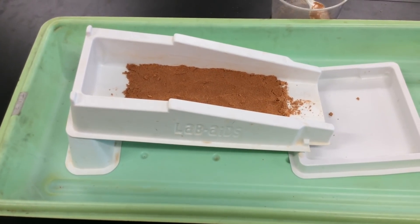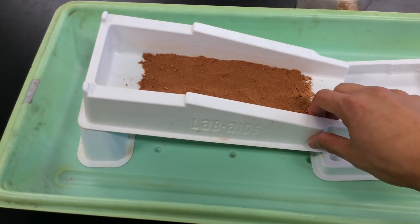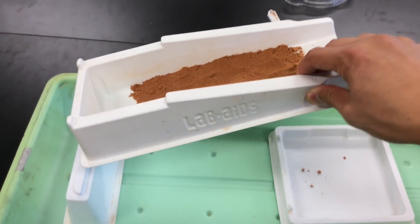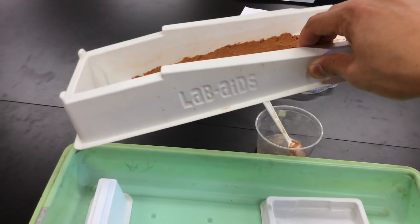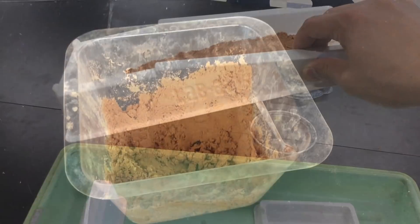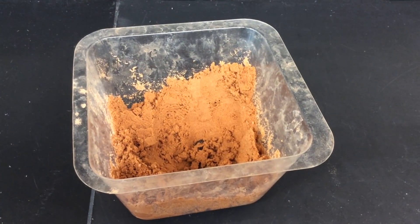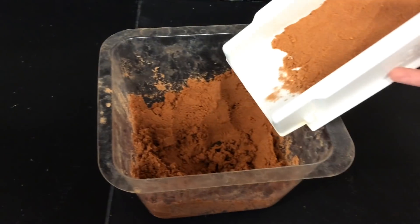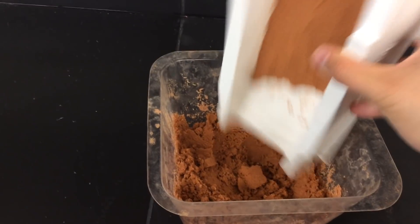Once you're ready to clean up, you can take your river model and you want to hold it so that it's tilted slightly back like this so no wet sand or water drip out. You're going to bring it right back to the bin where you got the sand from and you can dump the sand right back into that bin.